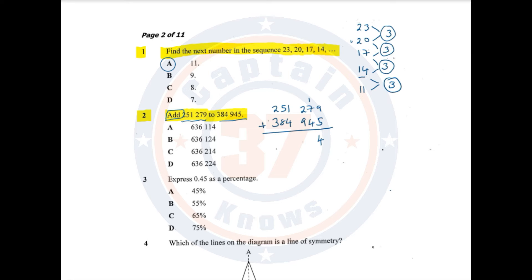1 plus 7 is 8. 8 plus 4 is 12, so I am going to write 2 and carry forward 1. 1 plus 2 is 3. 3 plus 9 is 12, so I am going to write down 2 and carry forward 1. And I will write that 1 there. So this is our answer.